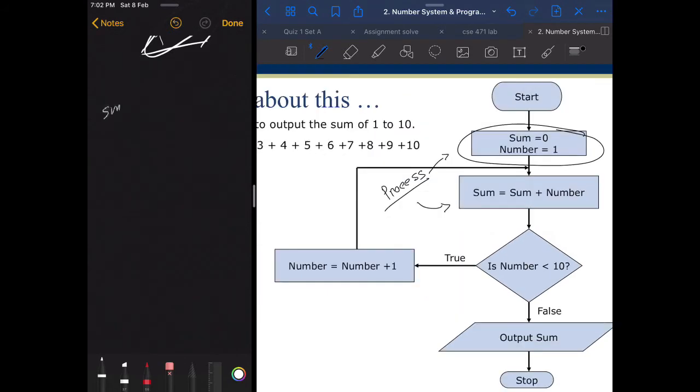Then again, we are doing another process which is we are doing calculations. So sum equals to sum plus number. Sum is initially 0 and number is 1. Then we go from this position to here. Now sum equals to sum plus number, so sum is 0 plus number which is 1, so 0 plus 1 that would be 1.